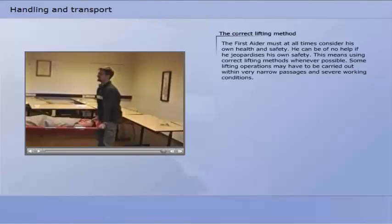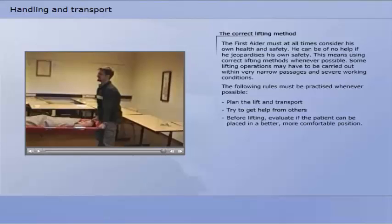The first aider must at all times consider his own health and safety. He can be of no help if he jeopardizes his own safety. This means using correct lifting methods whenever possible. Some lifting operations may have to be carried out within very narrow passages and severe working conditions. The following rules must be practiced whenever possible: plan the lift and transport, try to get help from others. Before lifting, evaluate if the patient can be placed in a better, more comfortable position. Keep your back straight, lift your head, and look straight ahead.